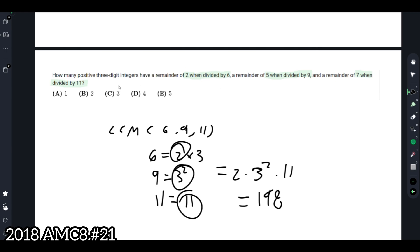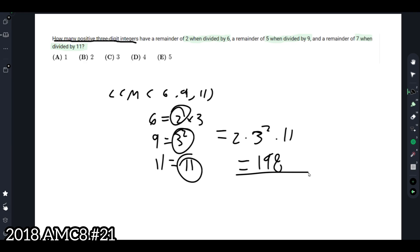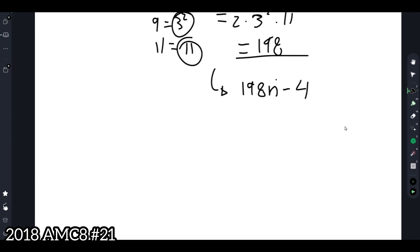Now we know that the question is asking how many of these integers exist. This is the least common multiple. But in the question, it says it can be any positive three-digit integer that satisfies. So we can conclude this to be 198 times any number n minus 4 to get the remainder. It must be a three-digit integer. Let's see how many values of n would lead us to get a three-digit integer.